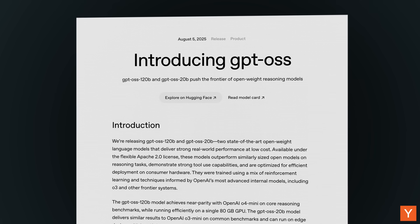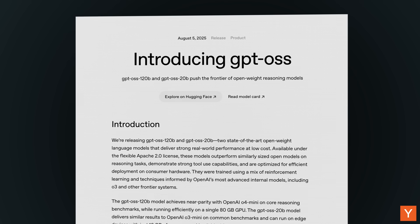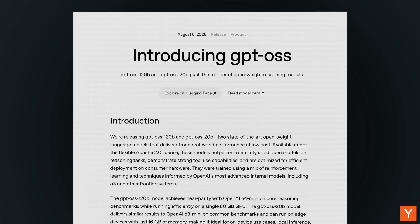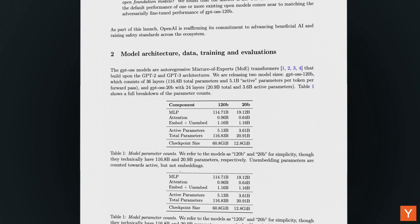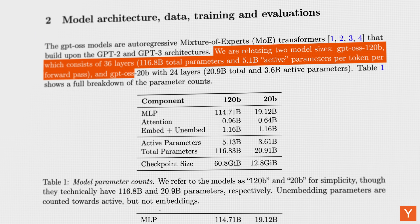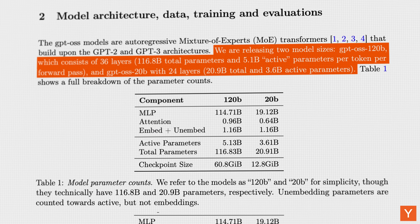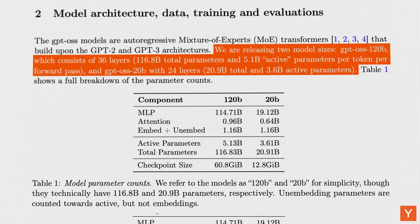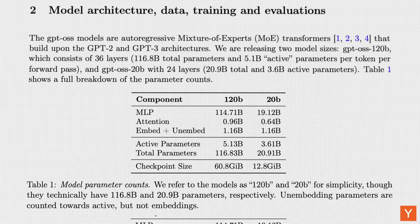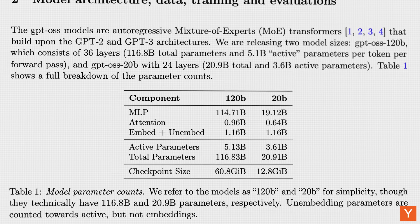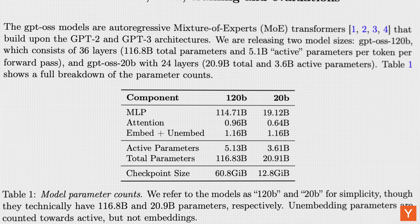GPT-OSS is one of OpenAI's most anticipated recent launches — a large, fully open weights model from one of the leading American AI labs. GPT-OSS is a mixture of experts model available in two sizes: 120 billion parameters and 20 billion parameters. Each token activates the top four experts, meaning only a portion of the total parameters are used at any given time, allowing for efficient inference without sacrificing the benefits of a larger model.